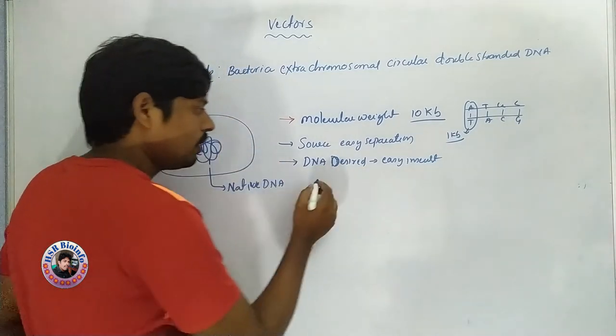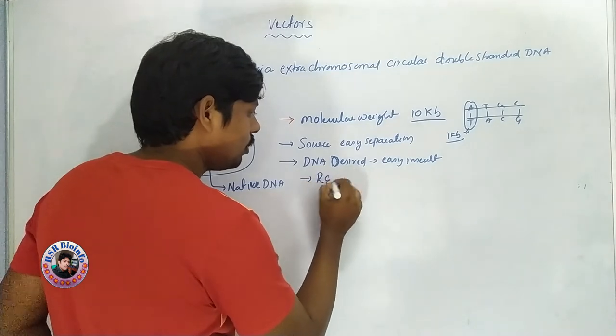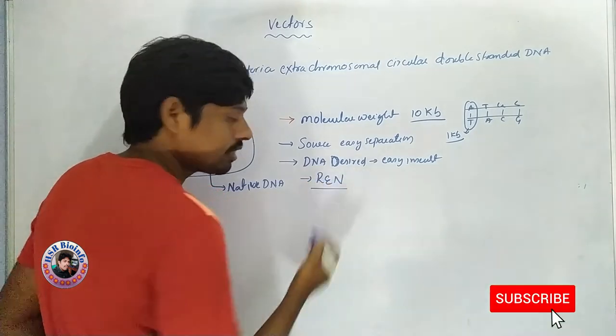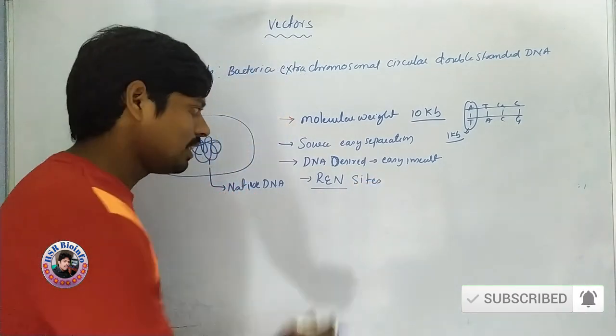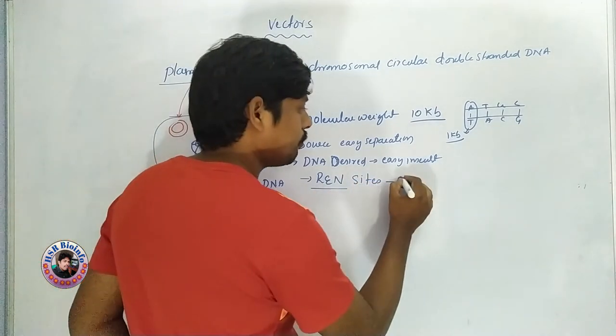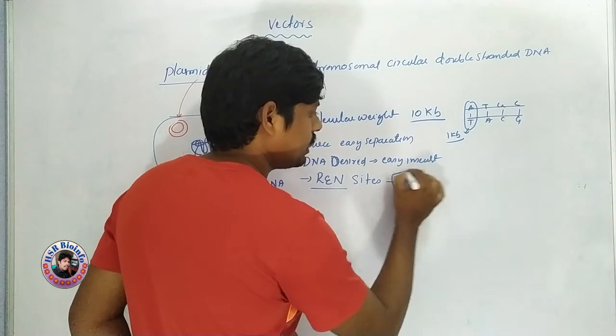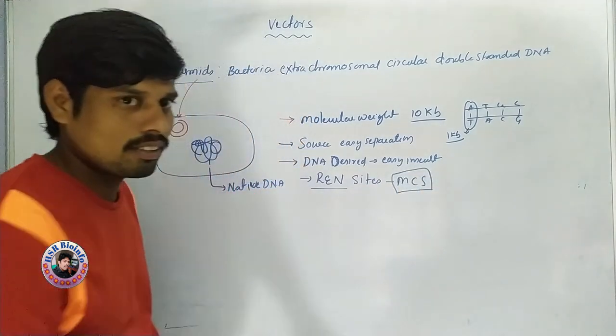Plasmids have restriction endonuclease sites - MCS, which stands for multicloning sites.